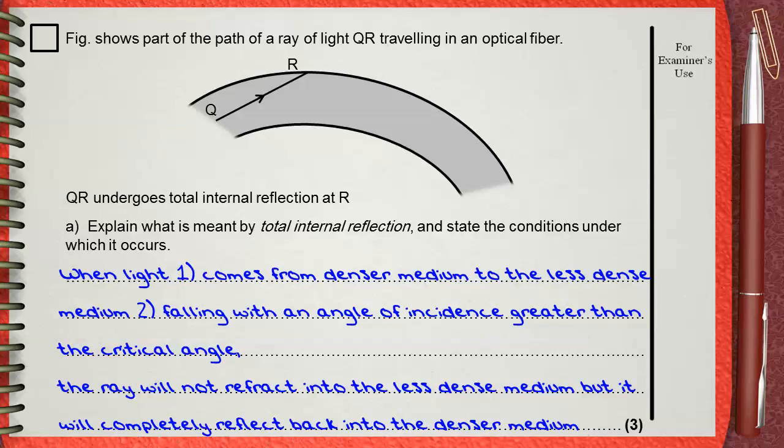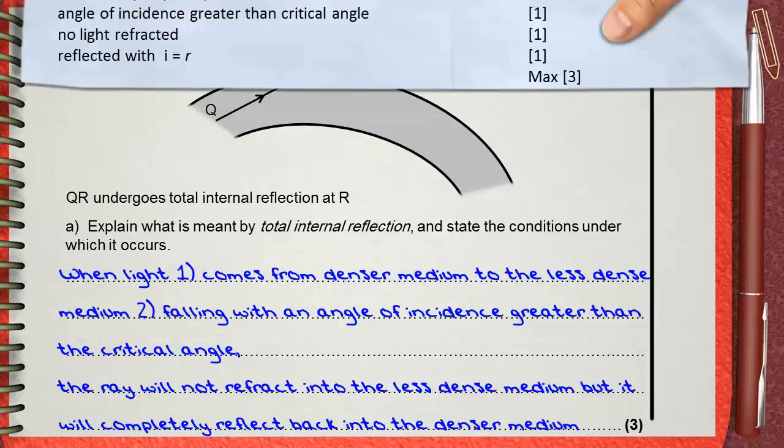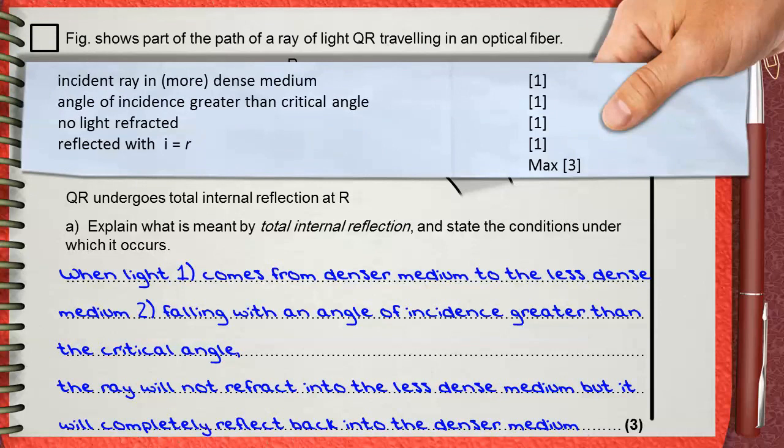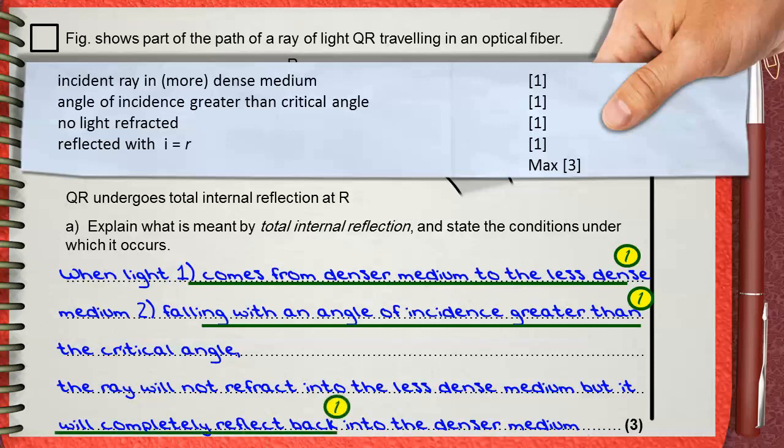The mark scheme gives three marks for this definition. Two marks are for the two conditions. Incident ray in more denser medium, this is the first condition for one mark. The second mark is for the second condition, where angle of incidence is greater than the critical angle. The third mark is to mention that no light will refract, or you can say it will reflect back into the denser medium with angle I equals angle R.